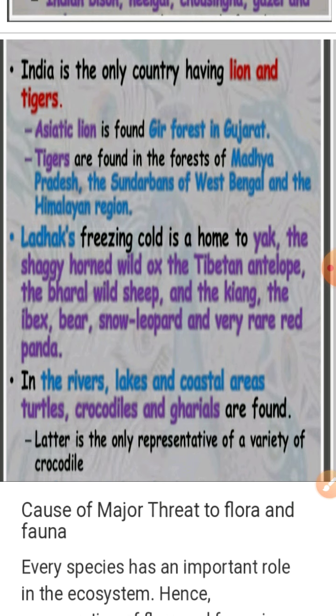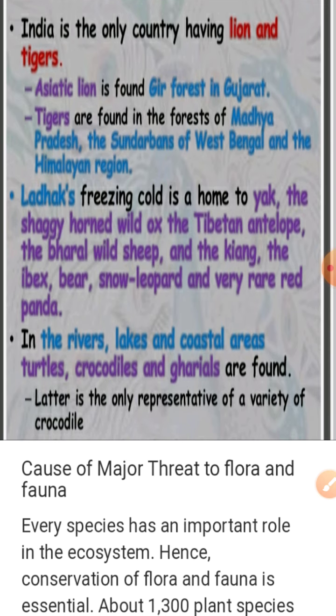Tigers are found in the forests of Madhya Pradesh and the Sundarbans of West Bengal. The Tibetan antelope, wild sheep, kiang, ibex, bear, snow leopard, and the rare red panda are also found in these areas. In river, lake, and coastal areas, turtles, different kinds of crocodiles, and gharials are also found.